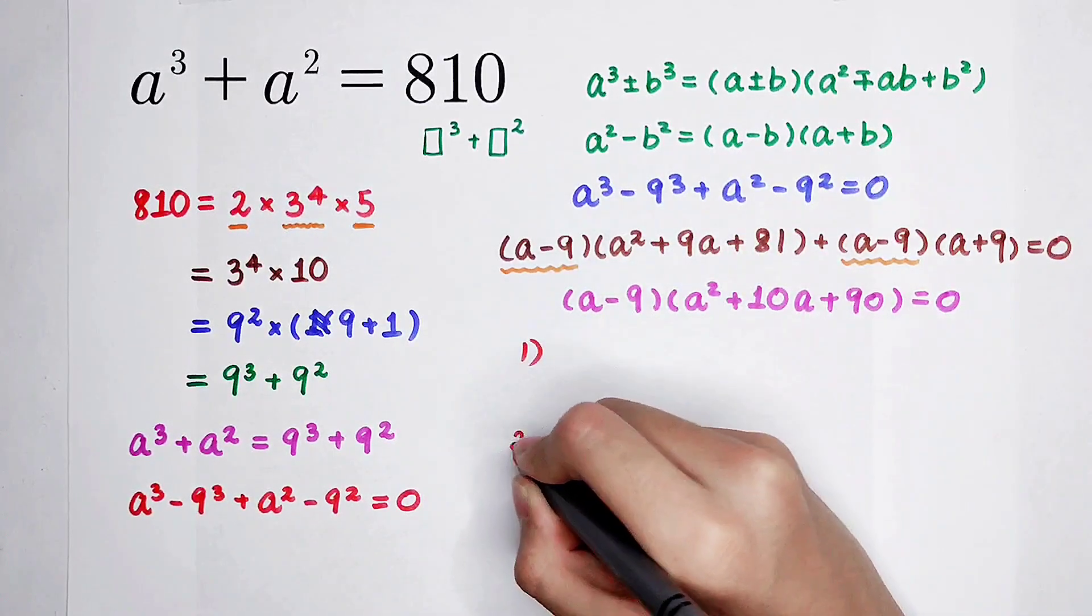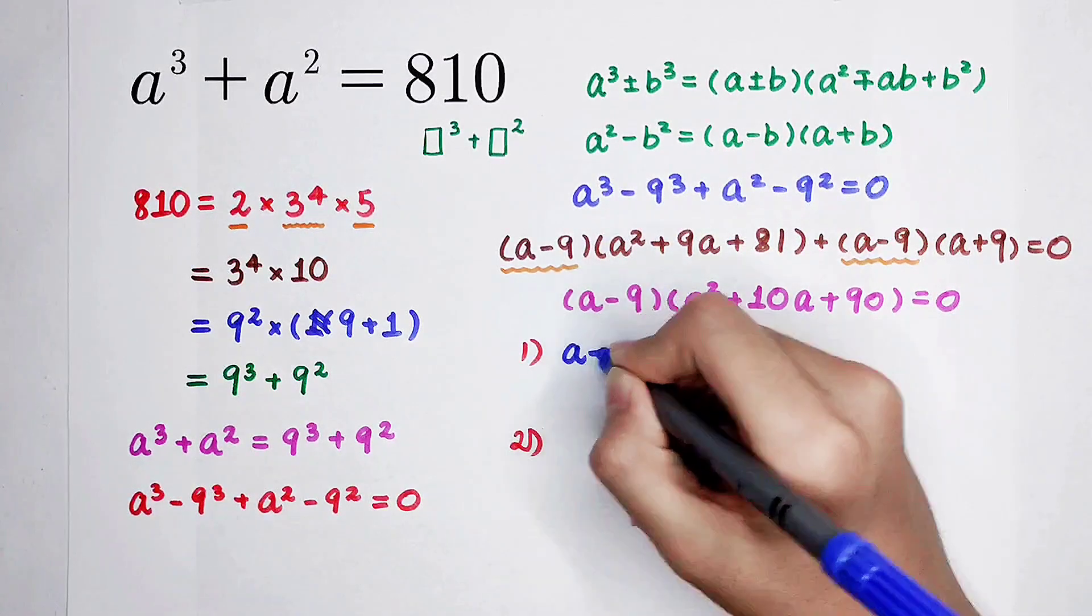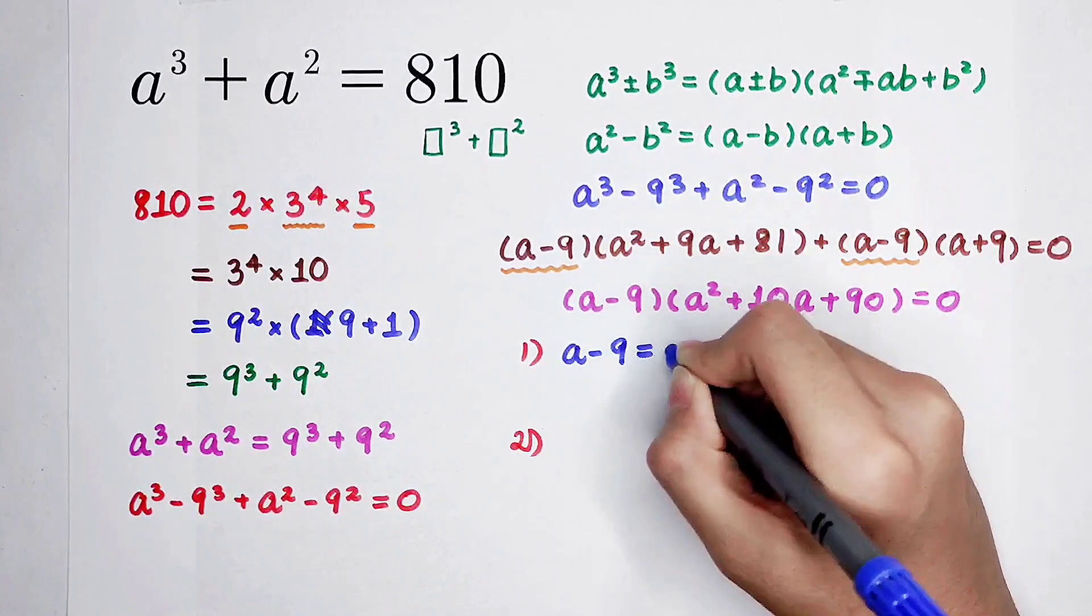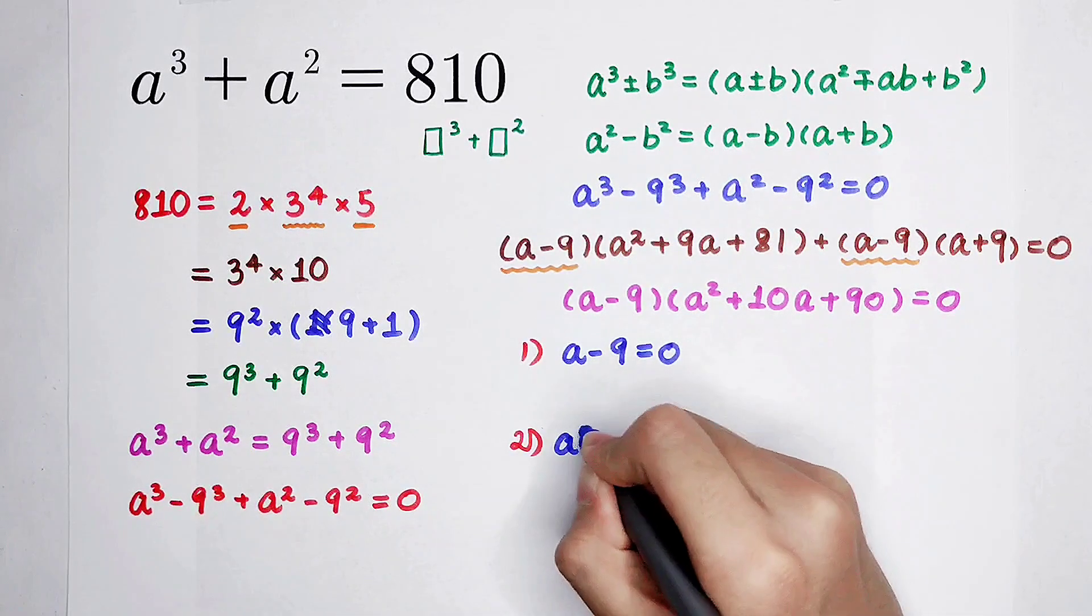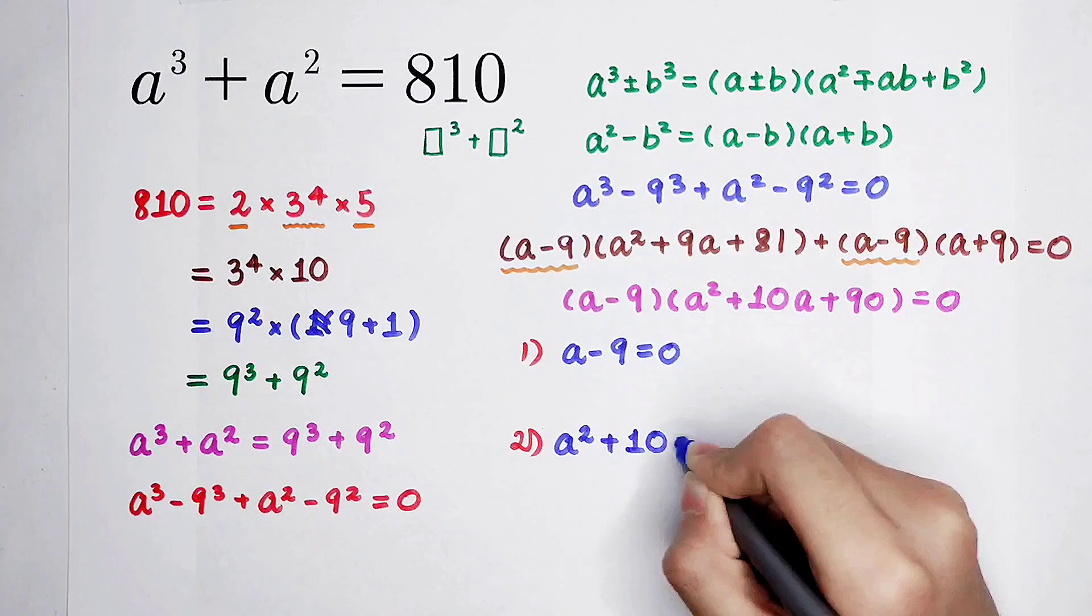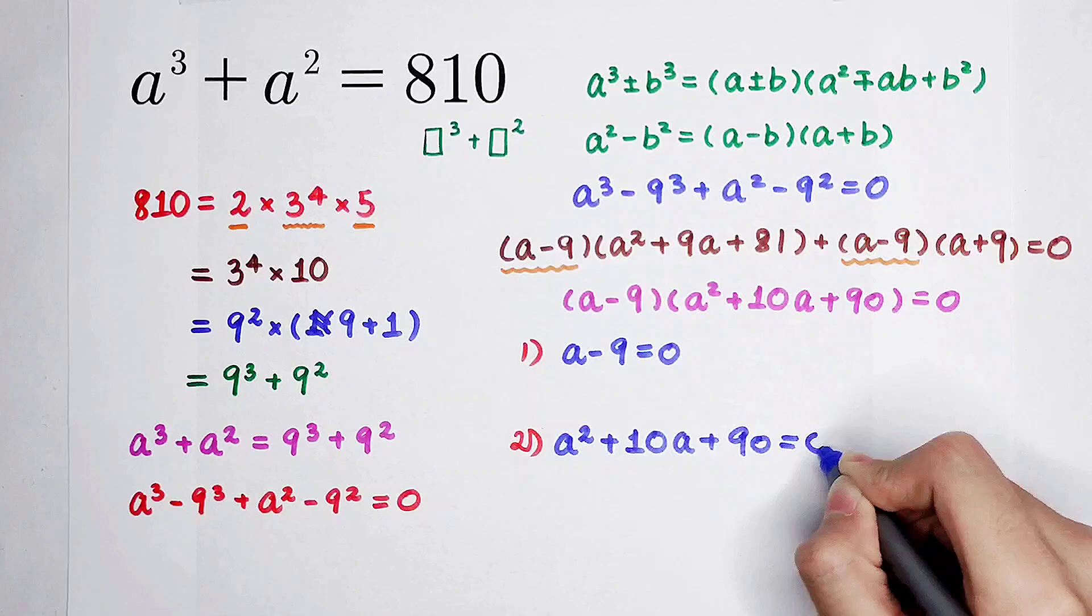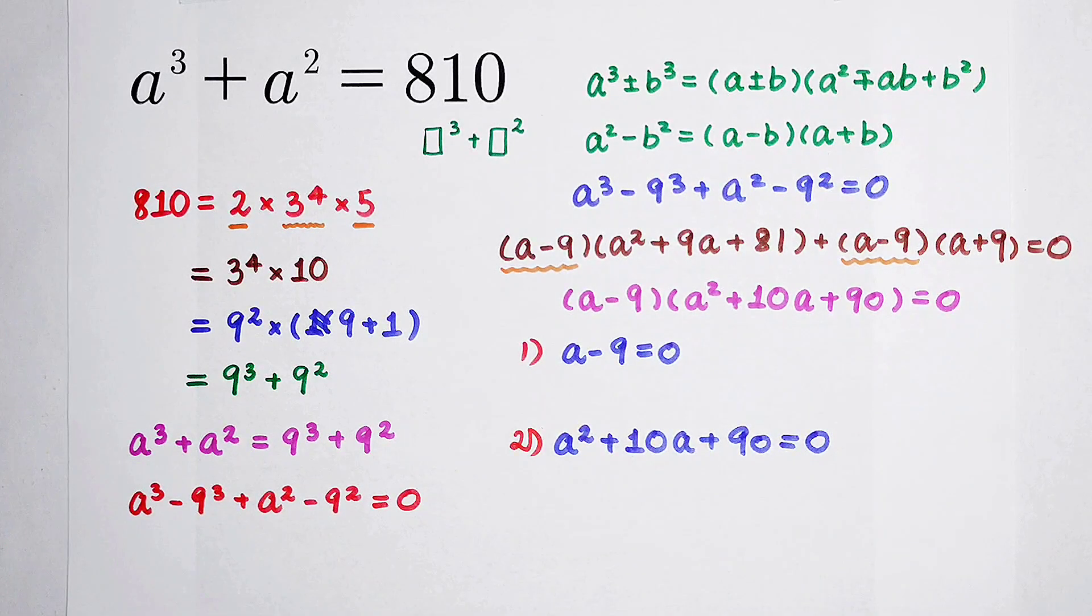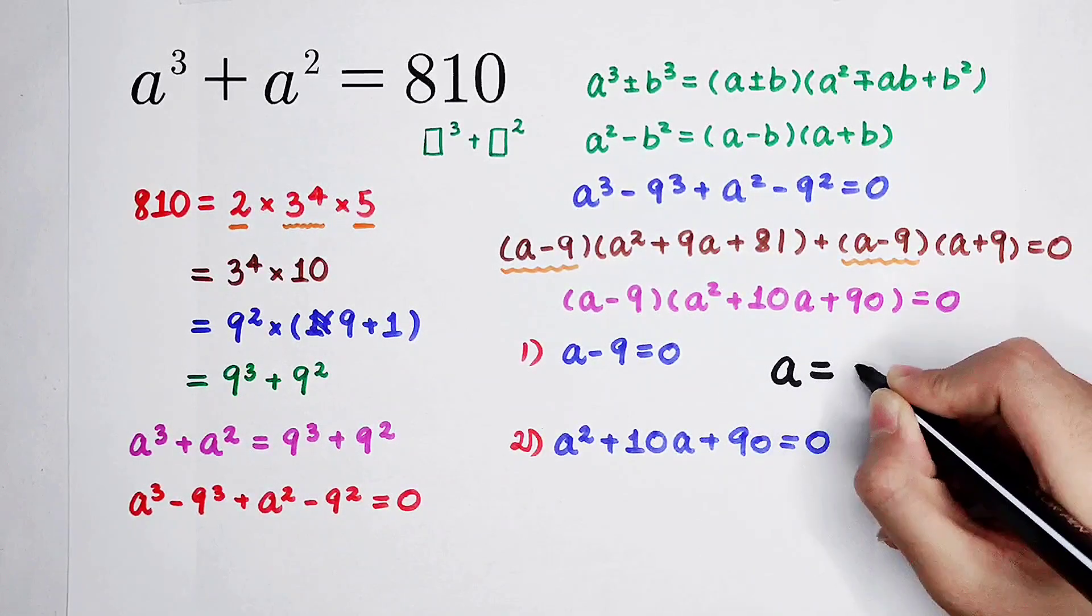For the first case, it's very simple and easy. We have a minus 9 is equal to 0. For the second case, we have a squared plus 10a plus 90 is equal to 0. So for the first case, a is equal to 9.